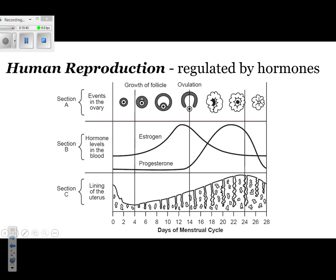The last slide covers the human female reproductive cycle — a diagram that appeared on the Regents last year. Section A shows events in the ovary: a small circle representing the egg develops, and eventually the egg is released from the ovary. That release is called ovulation, which happens around day 14 on average, though there can be some variation.